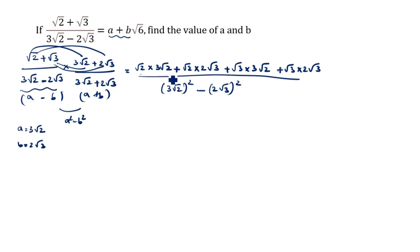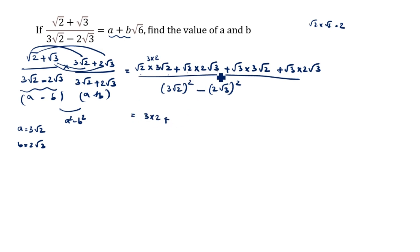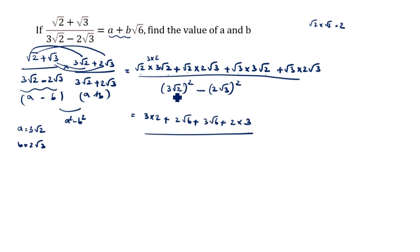Now we multiply the numerator terms: root 2 into root 2 is 2, so 3 into 2 gives 6. Then root 2 into root 3 is root 6, giving 2 root 6. Next, root 3 into root 2 is root 6, giving 3 root 6. Finally, root 3 into root 3 is 3, and 2 into 3 gives 6.